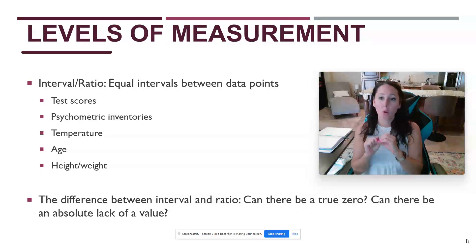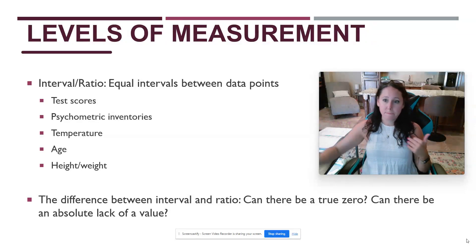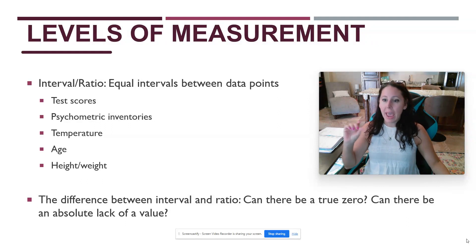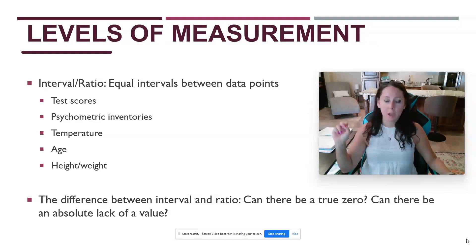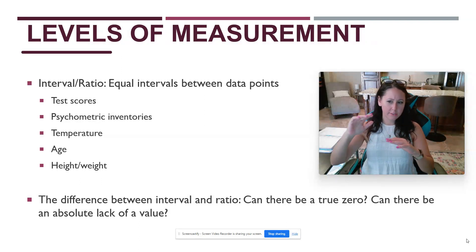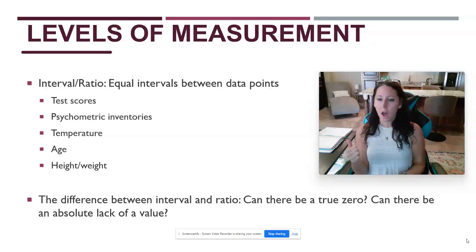Some standardized tests don't have a true zero — the baseline score might be a 10, for example. Measuring temperature in Fahrenheit is an interval example: saying it's zero degrees outside isn't an absolute measurement because you can go into the negatives — it can be negative five degrees. So zero is not some absolute measure when negatives are possible. That illustrates the difference between interval and ratio.